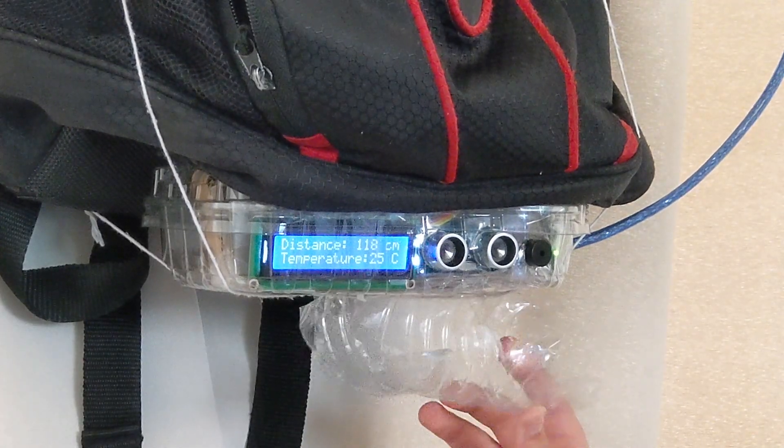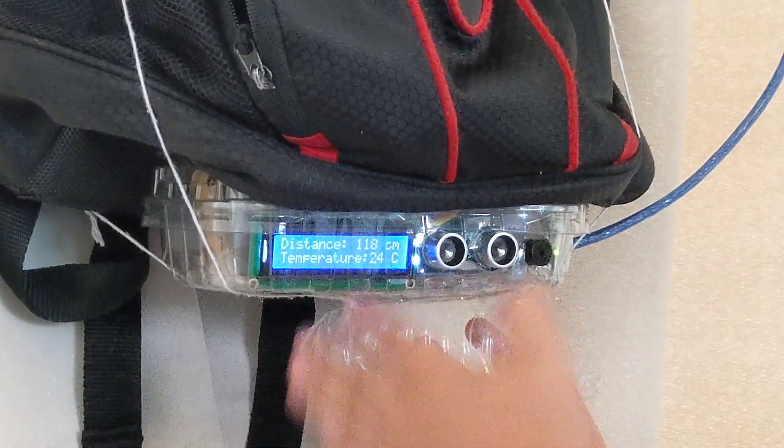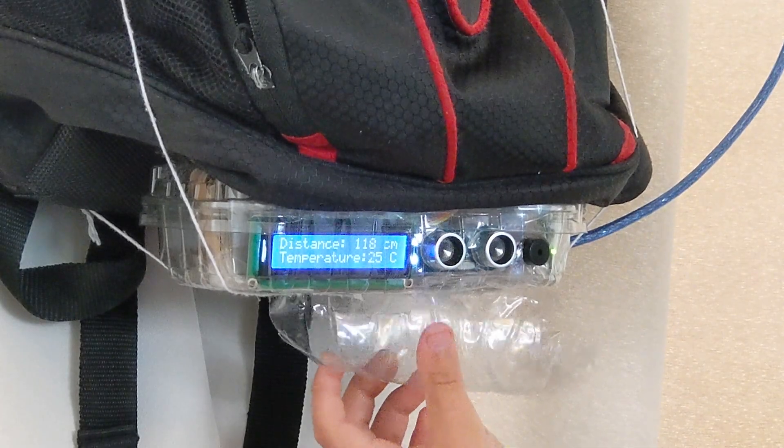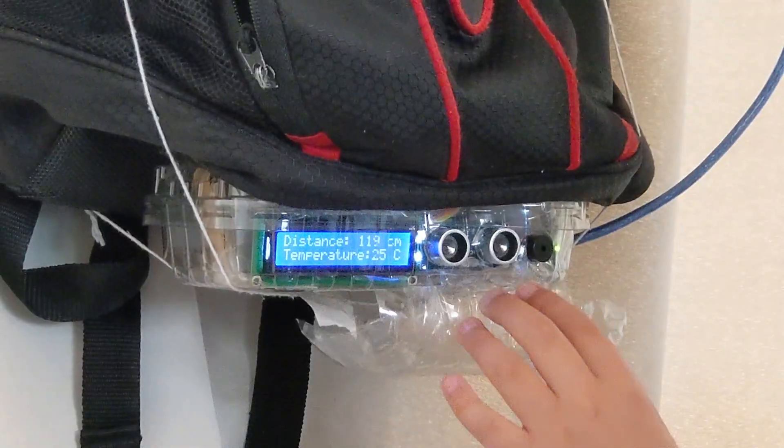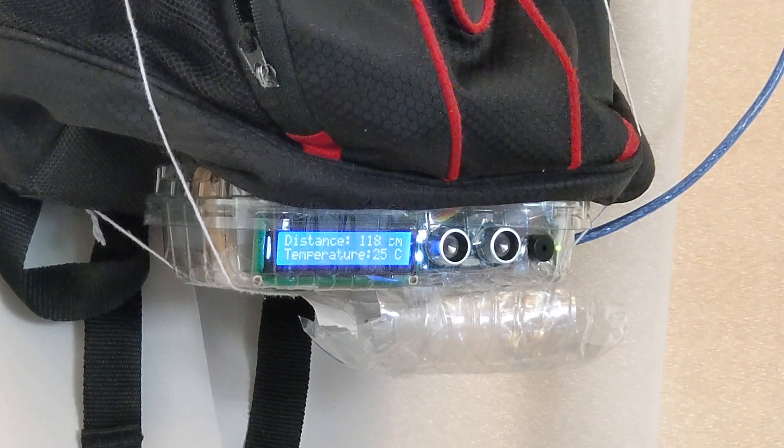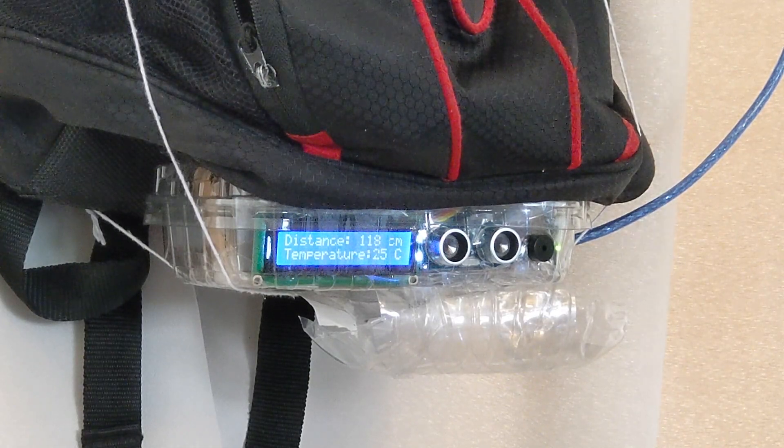I've cut a plastic bottle in half and chopped off the ends. If there is any rain, this can be pushed upwards and this gives a bit of protection from rain. When there is no rain, this can be pulled down so that the ultrasonic sensor can measure the distance.